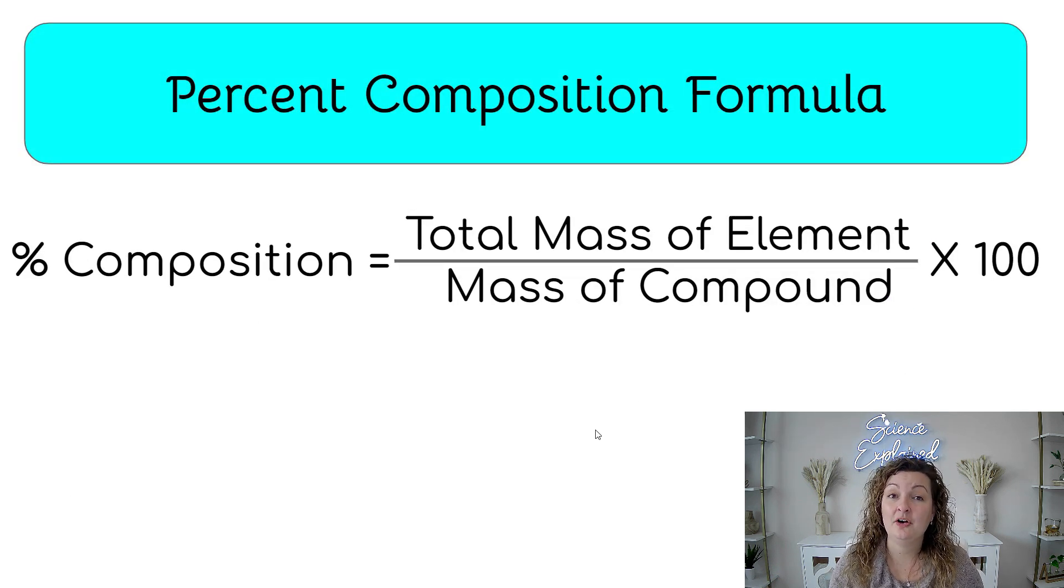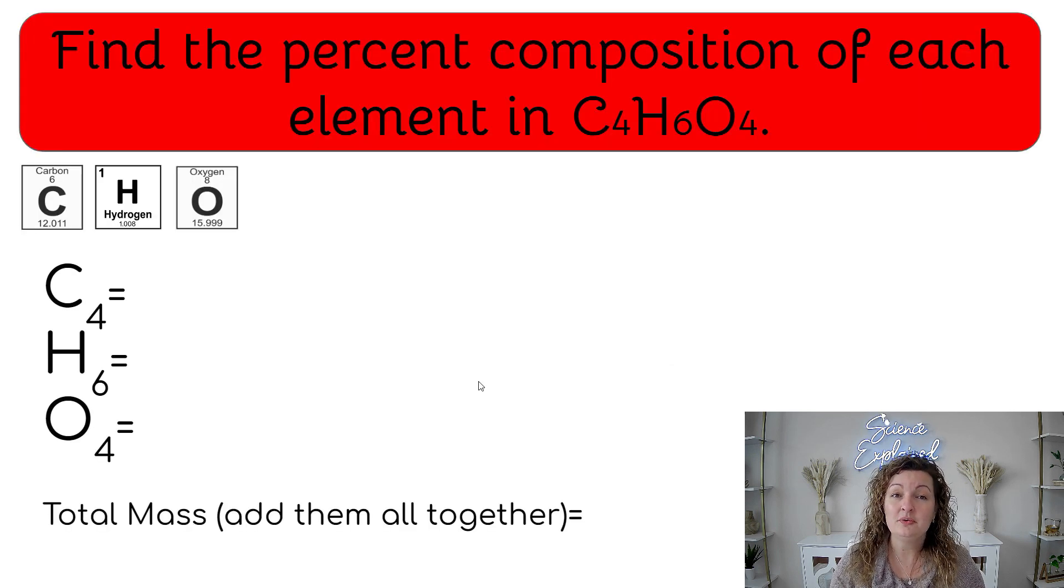So how do we calculate percent composition? Here's our formula that we're going to be using. We're going to take the total mass of the element and we're going to divide that by the mass of the compound, or in other words, the molar mass. And then we're going to multiply that by 100 in order to turn it into a percentage.